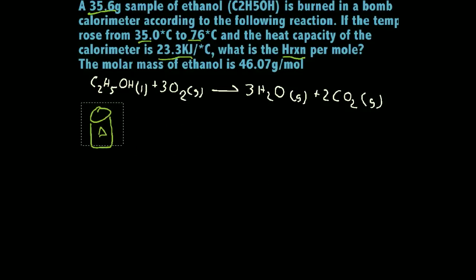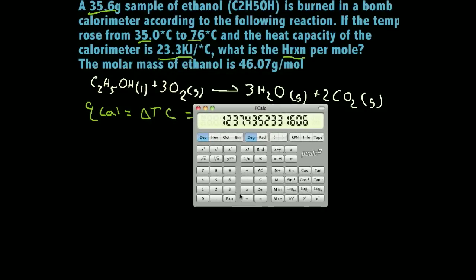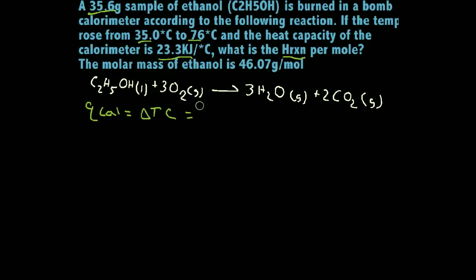So let's go ahead and solve this problem. It's done by using a formula here. The heat of the calorimeter is equal to the change in temperature of that calorimeter times the heat capacity of the calorimeter. They give us both these things in the problem. They give us the change in temperature, and they're saying it went from 76 to 35 degrees Celsius. So all we do is take our final temperature, which is 76 degrees Celsius, subtract that from our initial temperature, which is 35 degrees Celsius. That's 41 degrees Celsius.